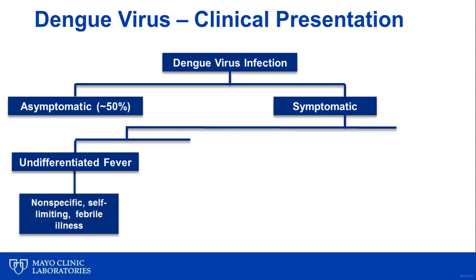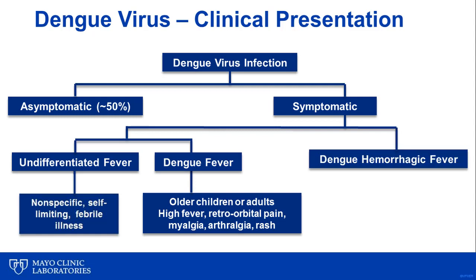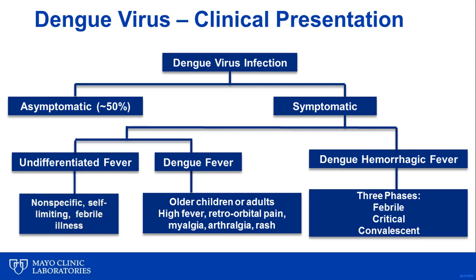The second manifestation of disease is dengue fever, which can be with or without hemorrhage. These patients are typically older children or adults and present with prolonged high fever and severe headache, retroorbital pain, and myalgia. While some mild epithelial hemorrhage may occur with dengue fever, these patients do not progress to significant plasma leakage, which is a hallmark of dengue hemorrhagic fever or dengue shock syndrome — the third potential clinical manifestation following infection. Individuals with dengue hemorrhagic fever progress through three different phases, including the febrile phase, which is indistinguishable from dengue fever, followed by the critical plasma leakage and hemorrhage phase, which occurs around the time of fever defervescence.